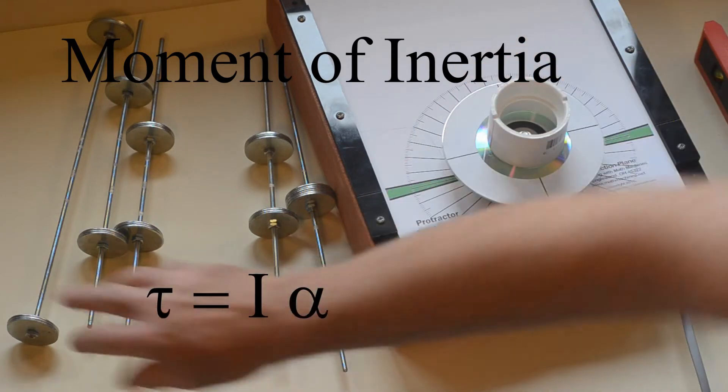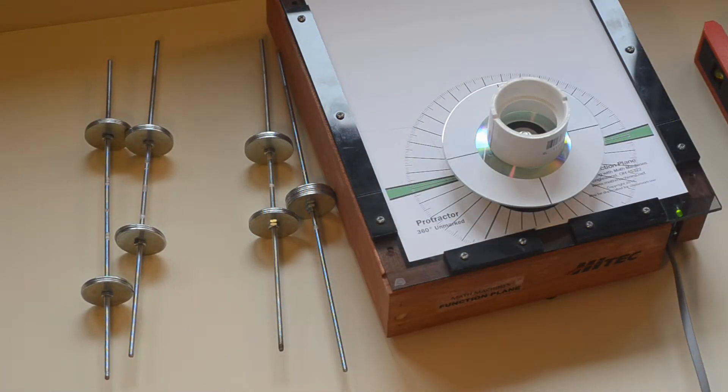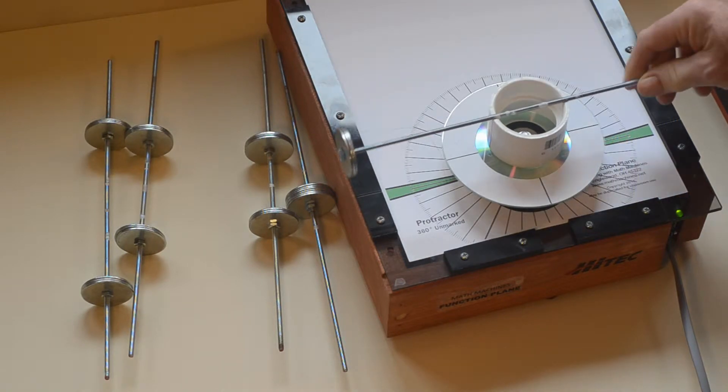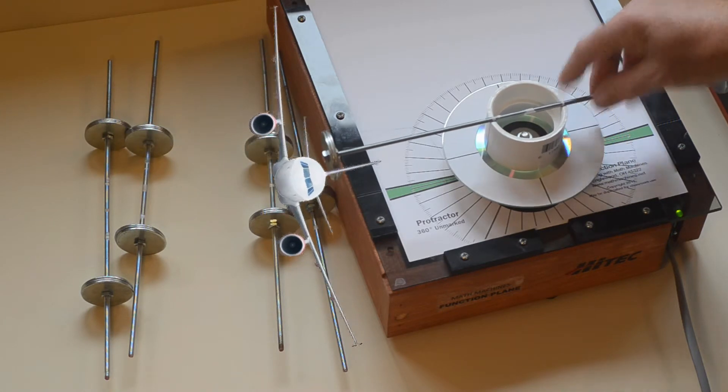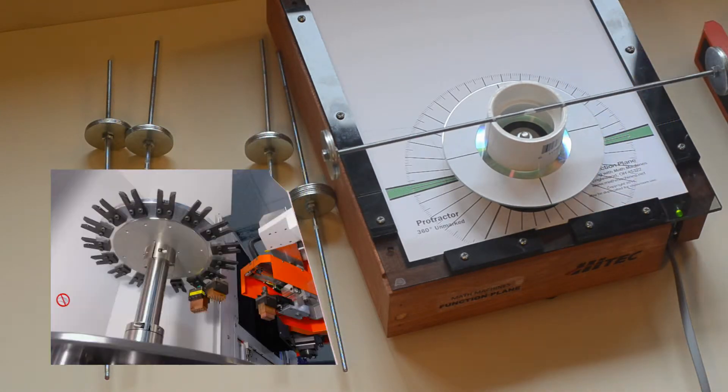Rotations are a frequent engineering and technological challenge, especially when they need to be done quickly. Examples range from putting spin on a curveball to changing the orientation of a jet aircraft, but we look here at the economically vital field of automated manufacturing.